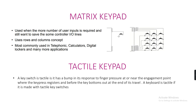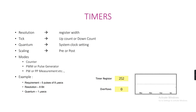A matrix keypad is used when a larger number of user inputs is required while still saving controller I/O lines. It uses a rows and columns concept and is mostly used in telephones, calculators, digital lockers, etc. A tactile key has a bump in its response to finger pressure at or near the engagement point where the key press registers. Timers have properties including resolution, tick, quantum, and scaling. Modes include counter, PWM, and pulse generator.